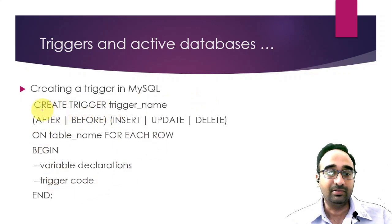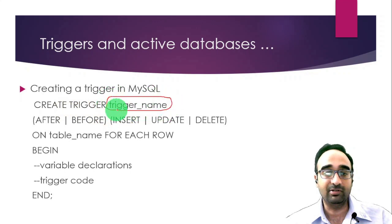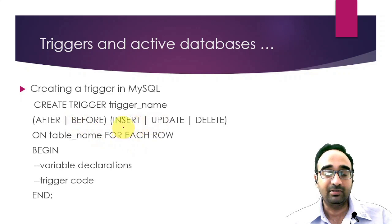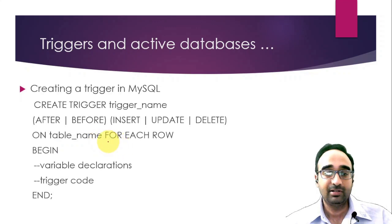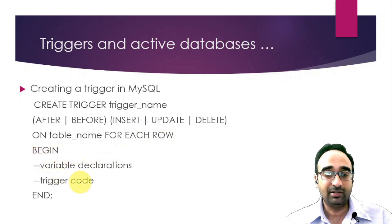To create a trigger in MySQL, the syntax is: write CREATE TRIGGER followed by the trigger name, then either AFTER or BEFORE, then one of INSERT, UPDATE, or DELETE, then ON and the table name, then FOR EACH ROW. After that, you write your variable declarations and trigger code between BEGIN and END.